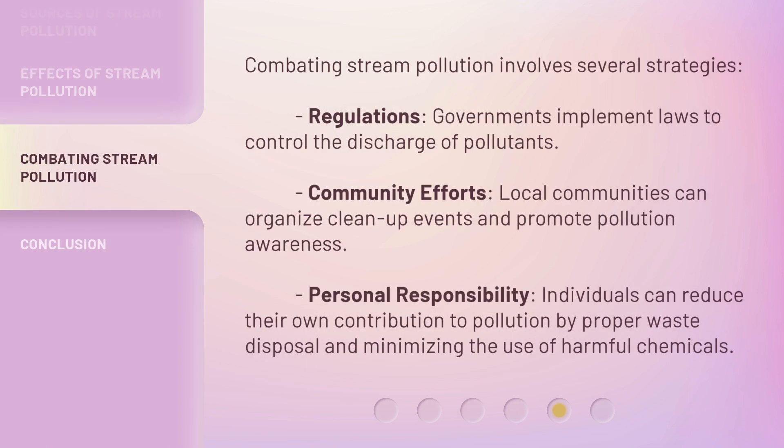Combating stream pollution involves several strategies. Regulations: governments implement laws to control the discharge of pollutants. Community efforts: local communities can organize clean-up events and promote pollution awareness. Personal responsibility: individuals can reduce their own contribution to pollution through proper waste disposal and minimizing the use of harmful chemicals.